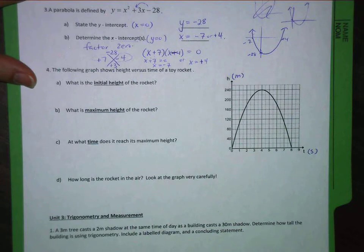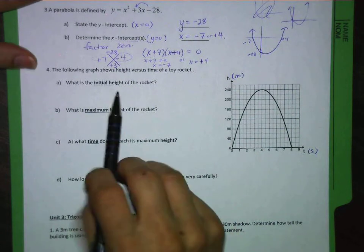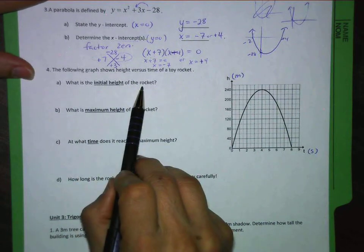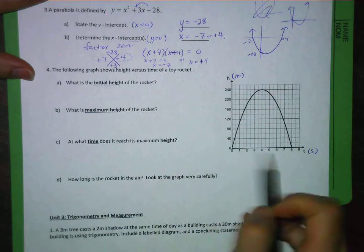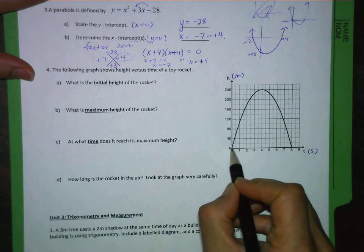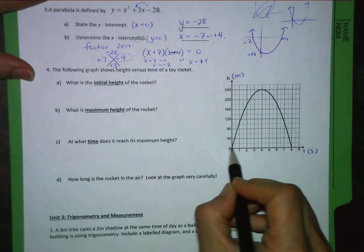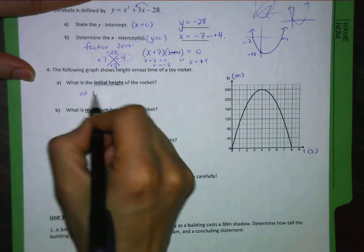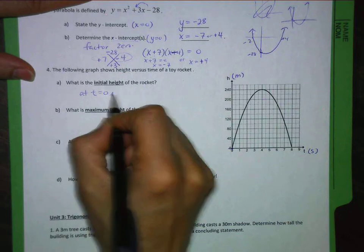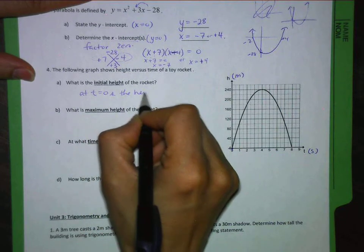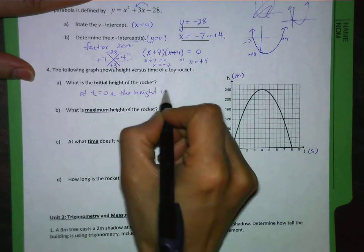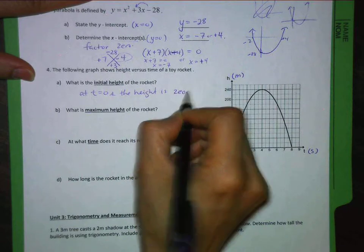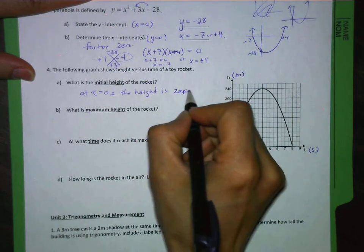What is the initial height of the rocket? Well, initial height means zero time is right here. So I can see it starts at zero. So the initial height, so at t equals zero seconds, the height is or was zero meters. Zero meters. Initial height.